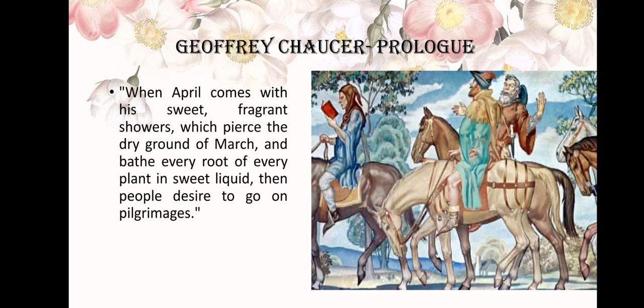The prologue starts with the lines: when April comes with his sweet fragrant showers, which pierce the dry ground of March and bathe every root in sweet liquid, then people desire to go on pilgrimages. This is the famous opening to the Canterbury Tales, where the narrator, Chaucer himself, is planning a pilgrimage. They gather at the Tabard Inn in Southwark, London — a company of 29 people — and prepare to journey to Canterbury, agreeing on a scheme of storytelling along the way.